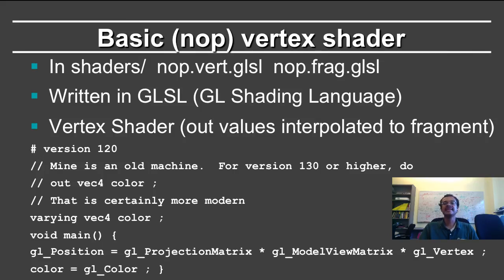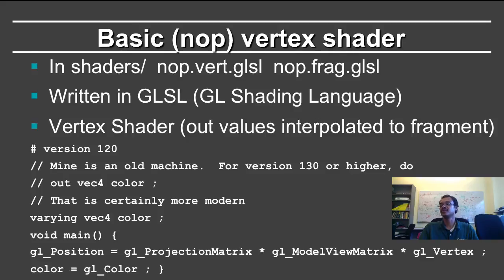Finally, we come to what a basic shader looks like. In the shaders directory it's called NOP because it really doesn't do much — it's almost a no-op shader. Of course, we'll make it more complicated in subsequent lectures. It is written in the GL Shading Language known as GLSL, which much like OpenGL itself provides a unified API in which to write shaders, which will later be compiled internally onto the graphics card. We have both a vertex shader and a fragment shader, and they communicate because the outputs of the vertex shader are often inputs to the fragment shader — the outputs at the vertices are interpolated, rasterized, and given to the fragment shader.